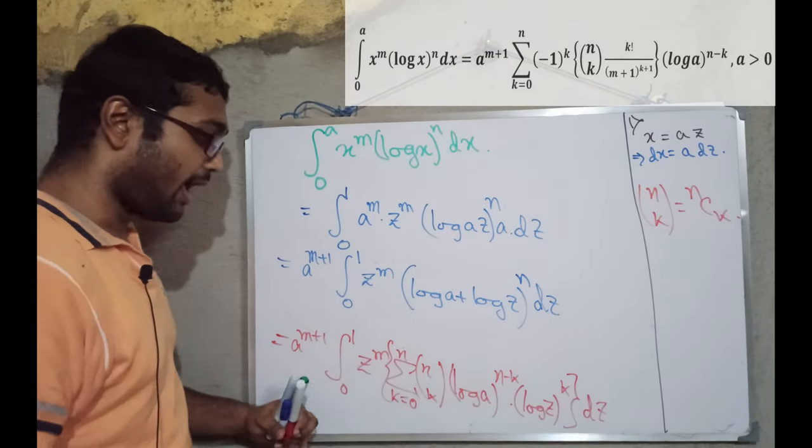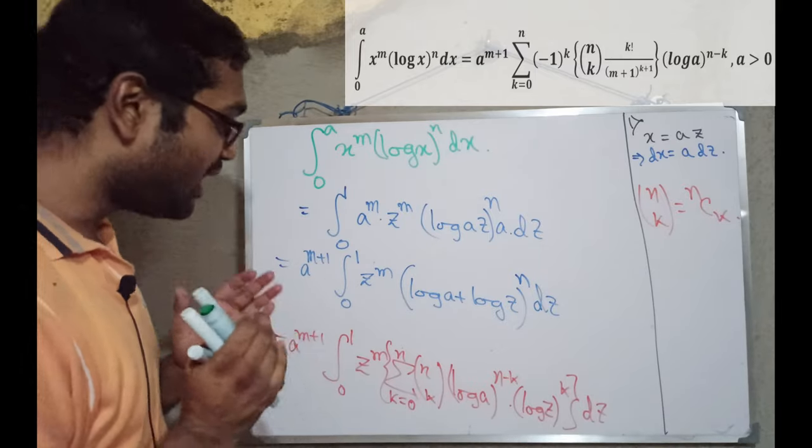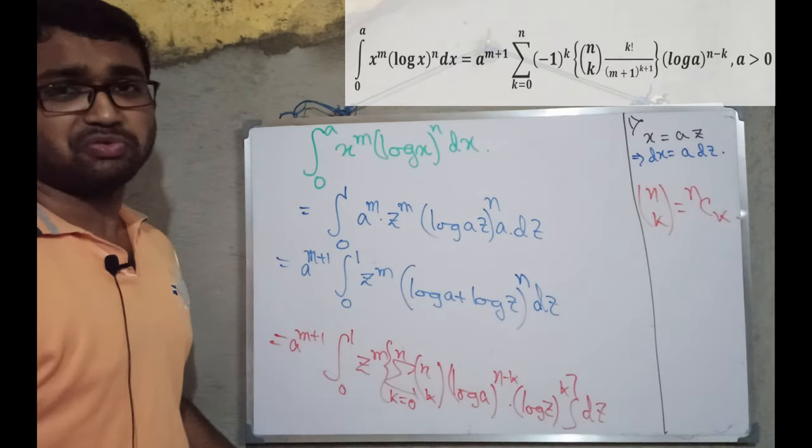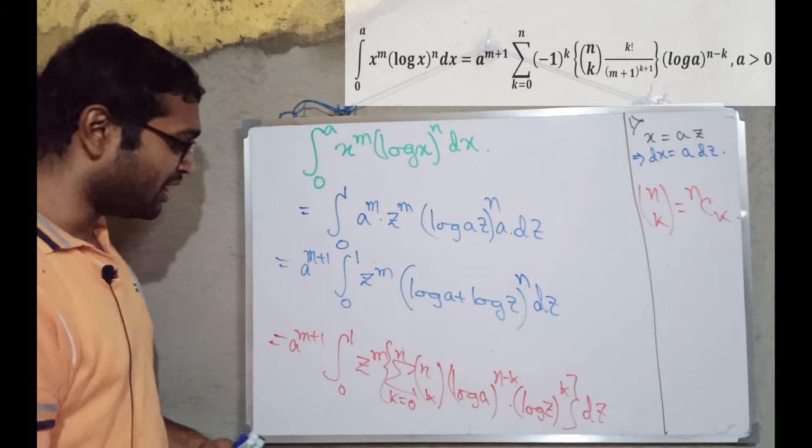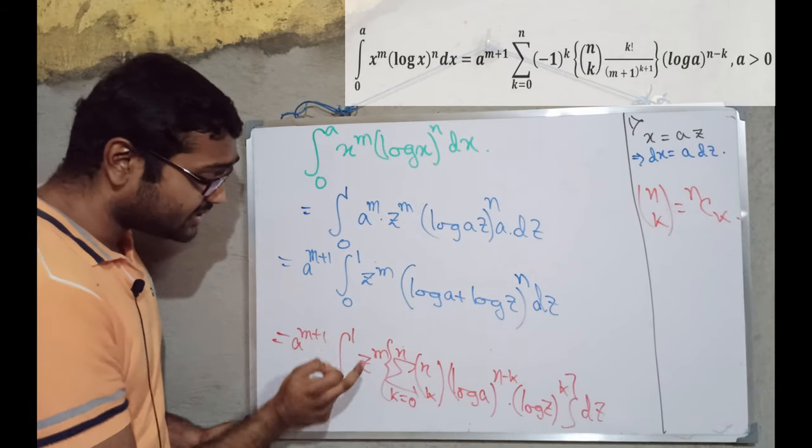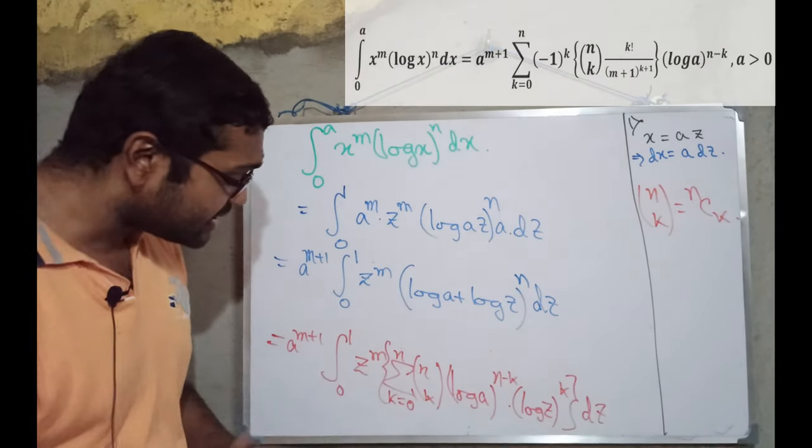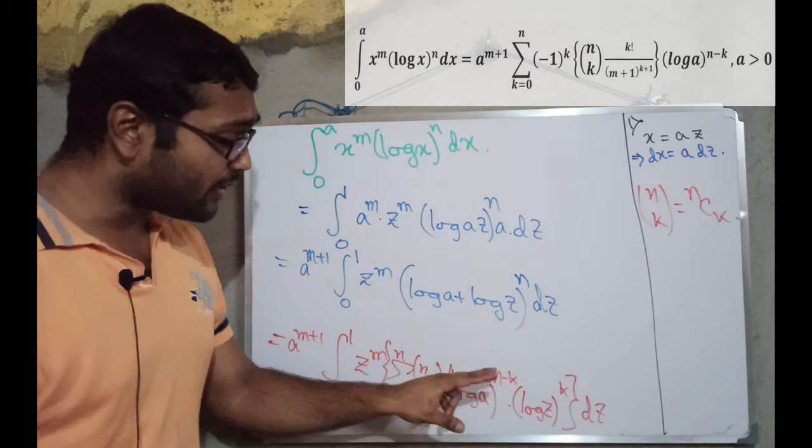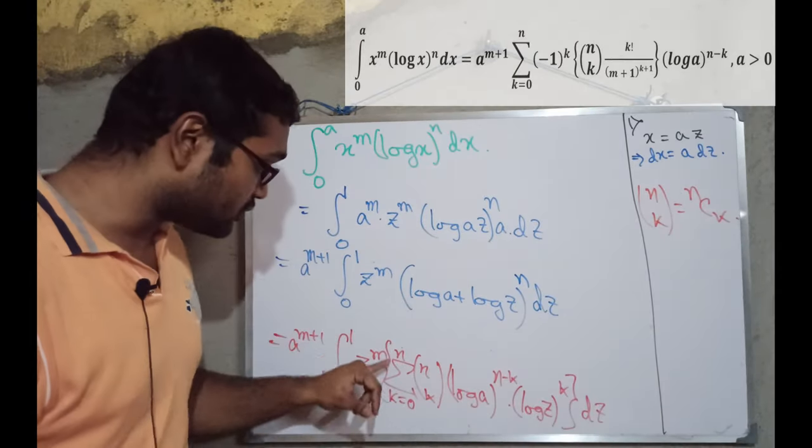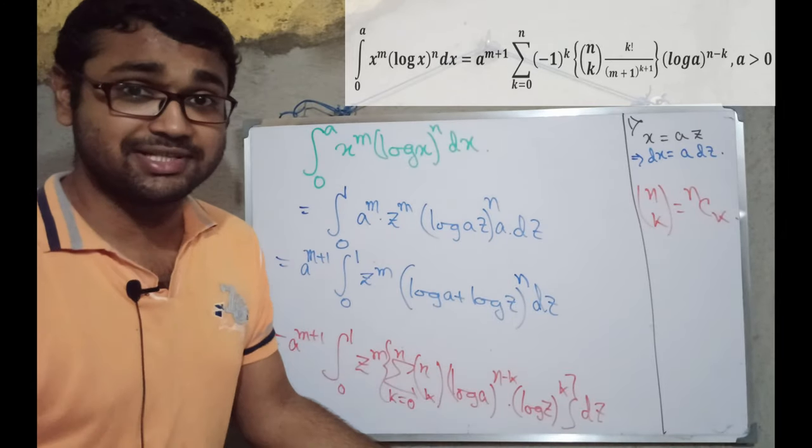This is actually what the integration is going to be. Now, just look at this beauty. This is so beautiful. Integration from 0 to 1, then z to the power m, then there is this summation. So, there is going to be from 0 to n. For each integer here, from 0 to n, we are going to get one integral. So, there are n plus 1 number of integrals.